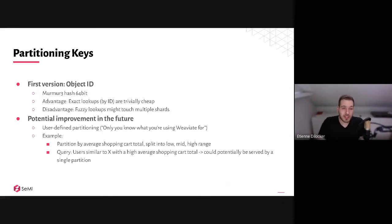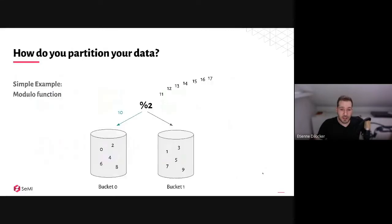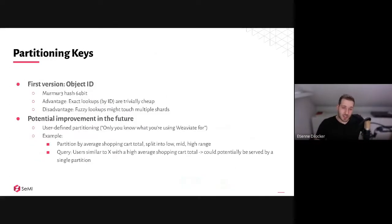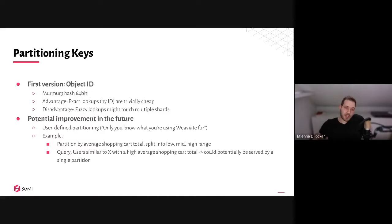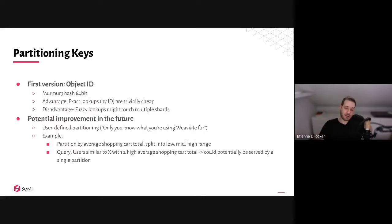Now that we've talked about how you partition, another question is what do you partition by? You need something to make that decision. Our first version will partition by the object ID. Everything in Weaviate needs to have an ID, and using that ID we can easily identify each object. If the ID is also the partitioning key, we know on each request which shard to consult. The partitioning calculation tells us: this ID lives in this virtual shard, which belongs to this actual shard.